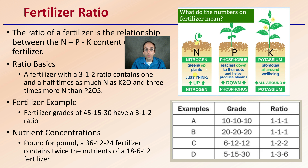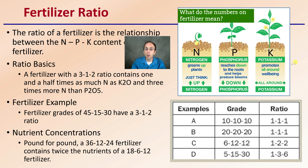Nitrogen is typically meant for greening up the plant. Phosphorus we think of as down — relating to roots and blooms. And potassium works all around. So it's the up-down-all-around lingo for nitrogen, phosphorus, and potassium, just to give you an idea of what each generally does.